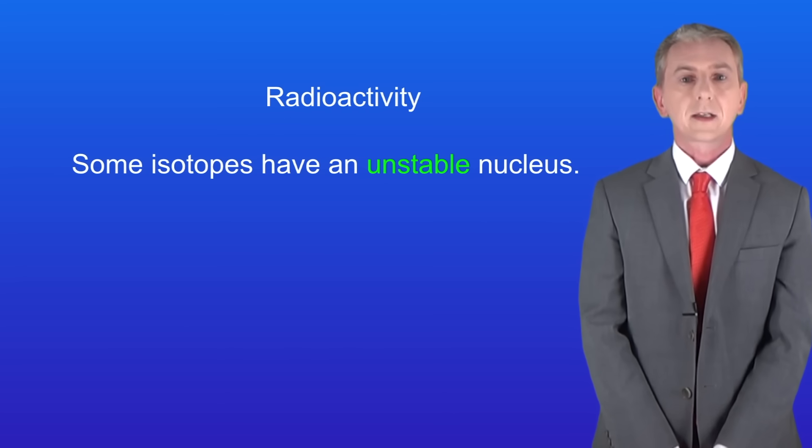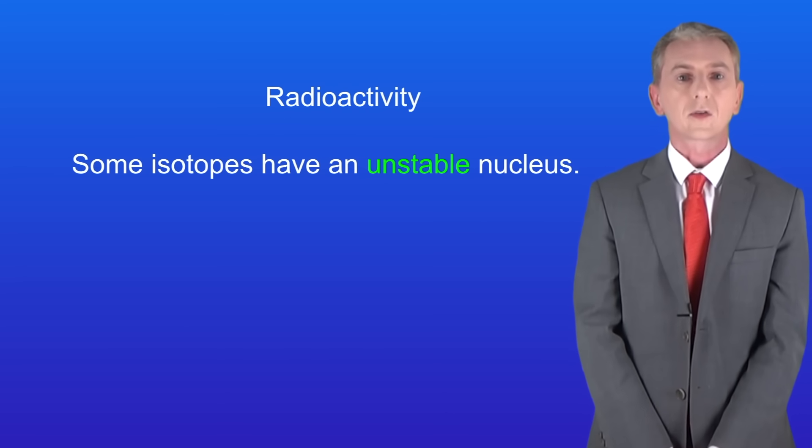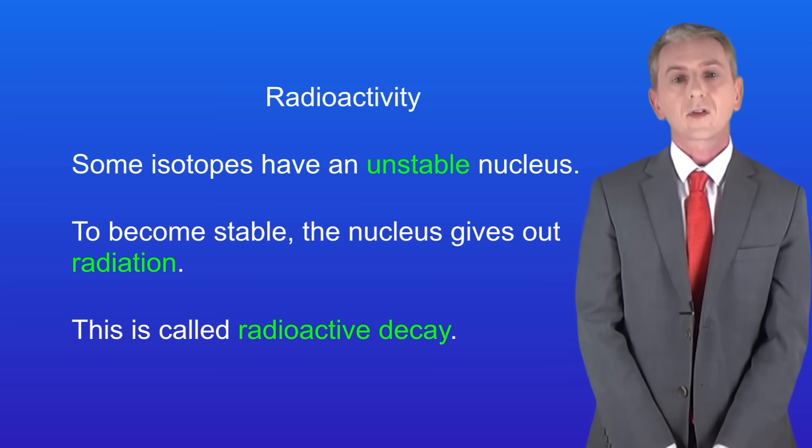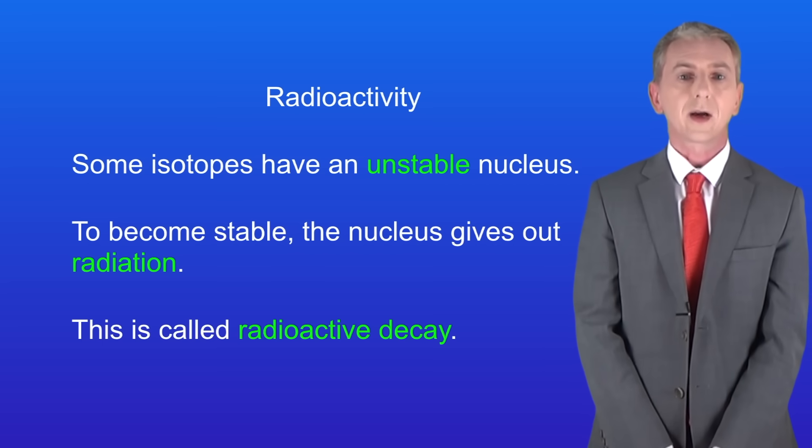The first key idea to get is that some isotopes have got an unstable nucleus. To become stable the nucleus gives out radiation and scientists call this process radioactive decay.